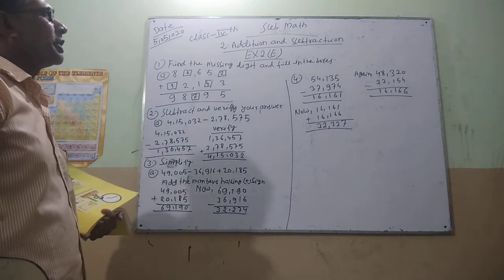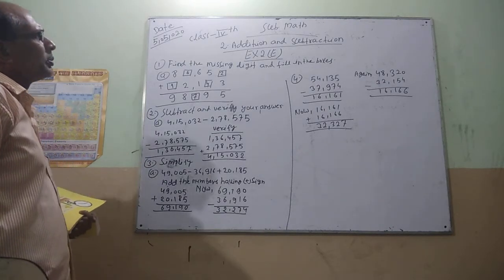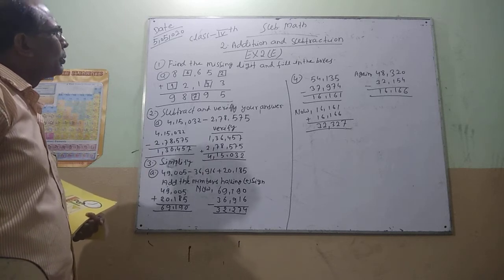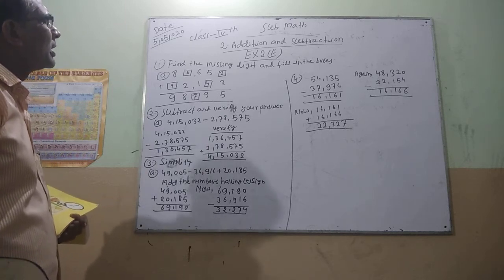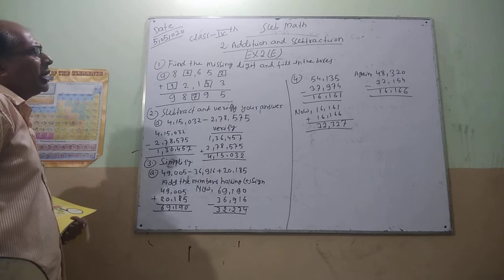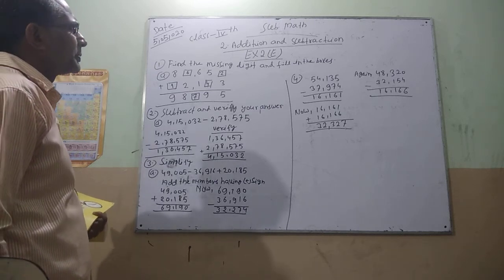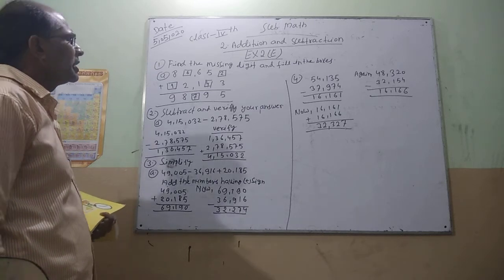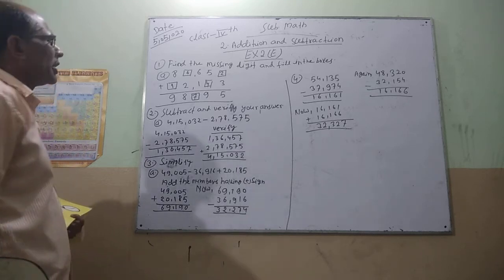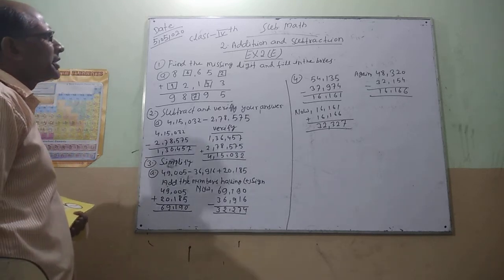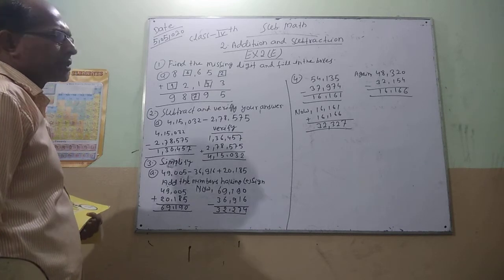Good morning everyone, all of you, Class 4. Chapter 2, Addition and Subtraction, Exercise 2E. Question number 1, 5 from the ACPG and clean the appearance. Place order with the missing D9.